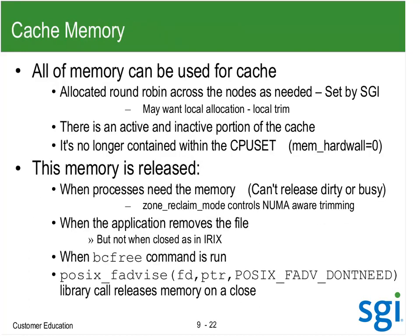Some people will run bcfree periodically even from a cron event to keep the page cache from getting too big. All of memory can be used for cache. A lot of our customers came from IRIX - IRIX would throw things away after they've been aged. So all of memory can be used for cache; the system has been idle for a couple of days and all your memory is gone. That's why I spent time pulling apart the dirty, writeback, NFS unstable, and similar fields. The page cache is allocated round robin across the nodes within the CPU set, and this is set by the memory spread page cache in the CPU sets.